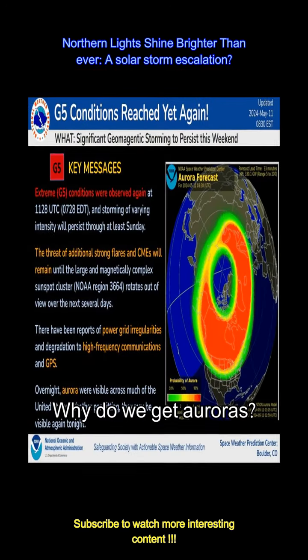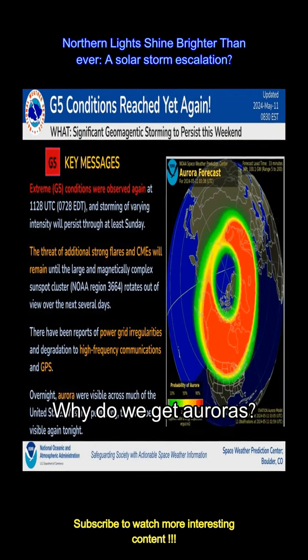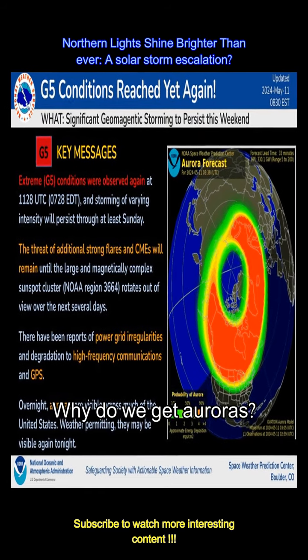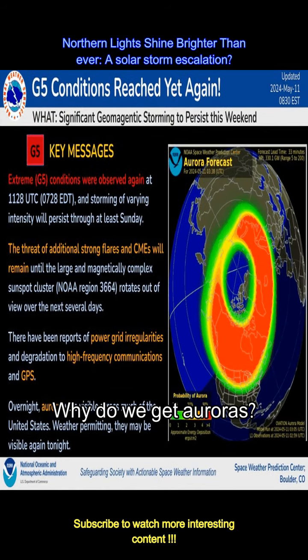According to NASA, there are two things we call solar eruptions: solar flares and coronal mass ejections. They often occur together, but not always. Solar flares are intense flashes of light, a result of the Sun's complex magnetic fields abruptly rearranging themselves.